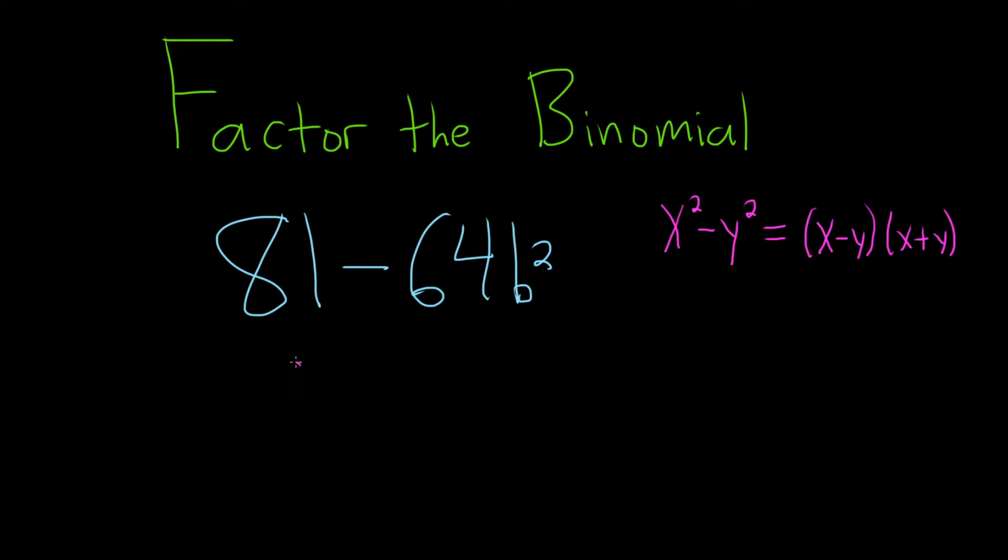The 81 can be written as 9² minus, and then 64 is 8², and we still have the b² here. The trick is we can write this as 9² minus (8b)².